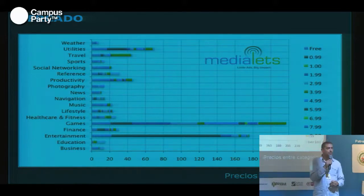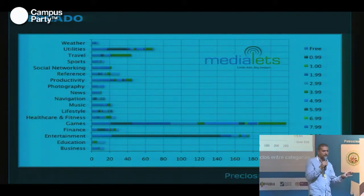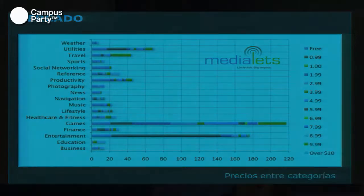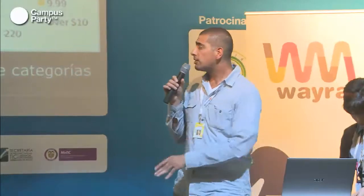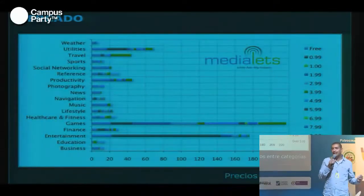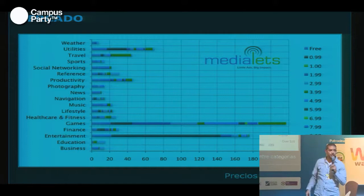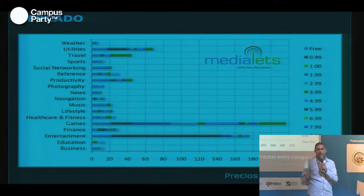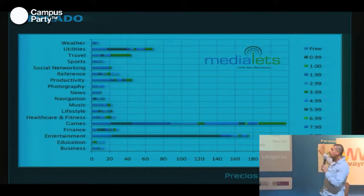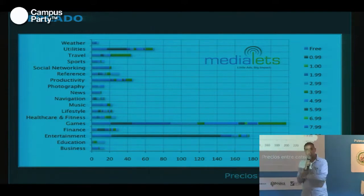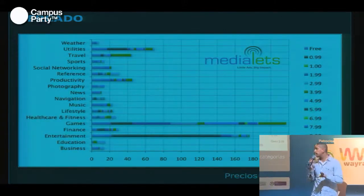Si bajamos un poco más dentro de las App Store para mirar cómo se comportan los millones de dólares en ventas, la gran mayoría se concentra en unas categorías específicas. Lo que vemos en esta gráfica es la distribución de precios de venta de aplicaciones dentro de las categorías. En el caso de juegos y entretenimiento, hay una gran cantidad de posibles valores de aplicaciones. En Apple podemos encontrar aplicaciones de 99 centavos, un dólar con 99, dos dólares con 99. Eso nos da una idea de cuánto podría colocarla para la venta.